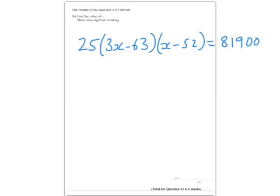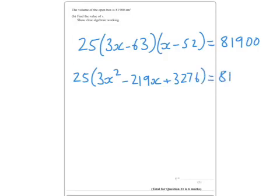Now, personally, what I'd do here is, and I haven't got loads of room, so you're going to have to bear with me. I get 3x squared there, minus 219x, plus 3276, equals 81900. OK, multiply out the brackets, you get 75x squared, minus 5475x, plus, oh, would you look at that...